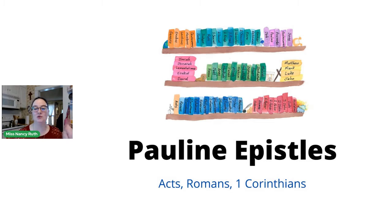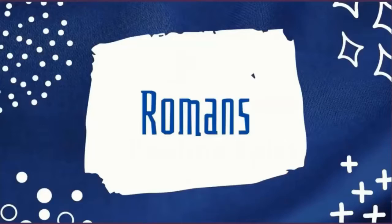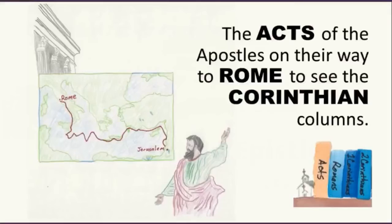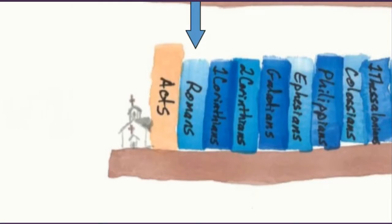So let's look at how to find the book of Romans. Open your Bible in the middle, then open the right half in the middle, then flip until you get to Romans. After the Gospels is Acts — the Acts of the Apostles. Acts, Romans, 1 Corinthians.